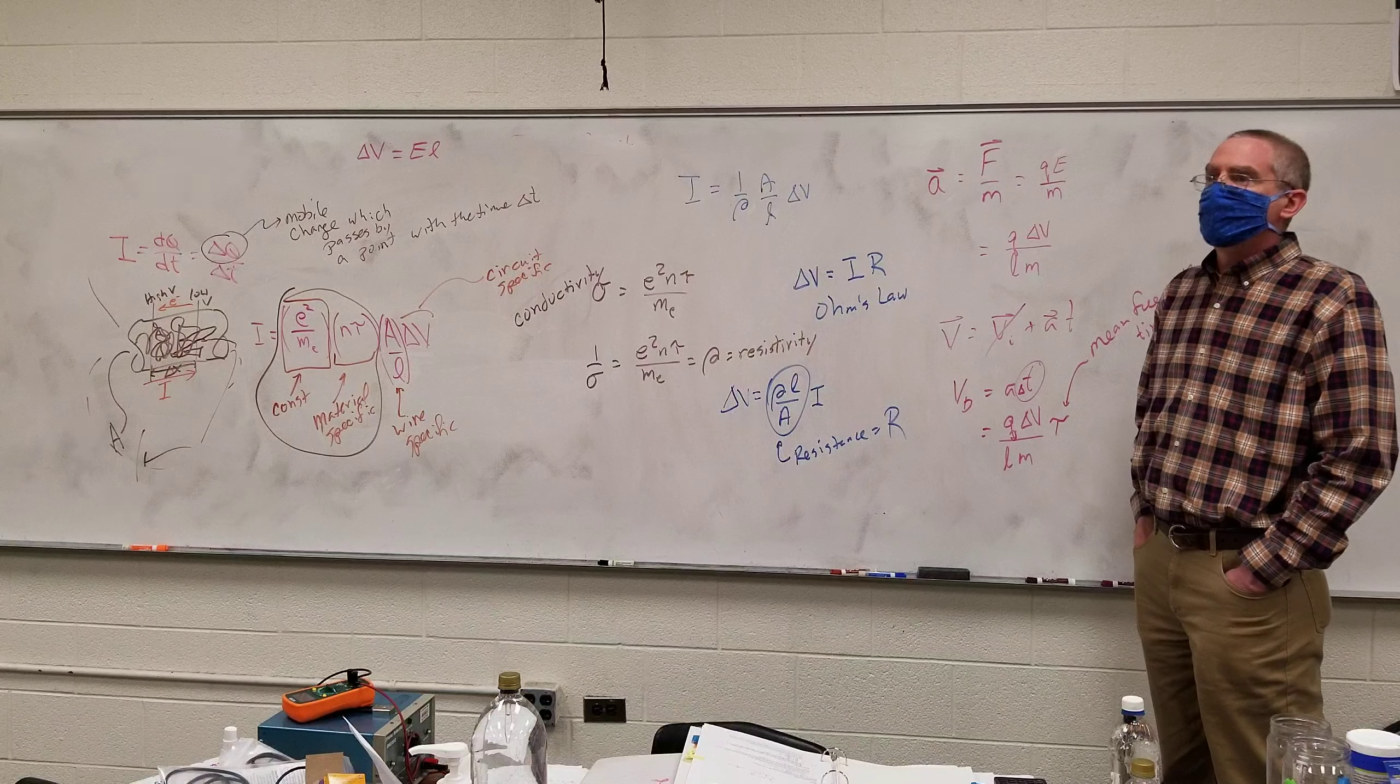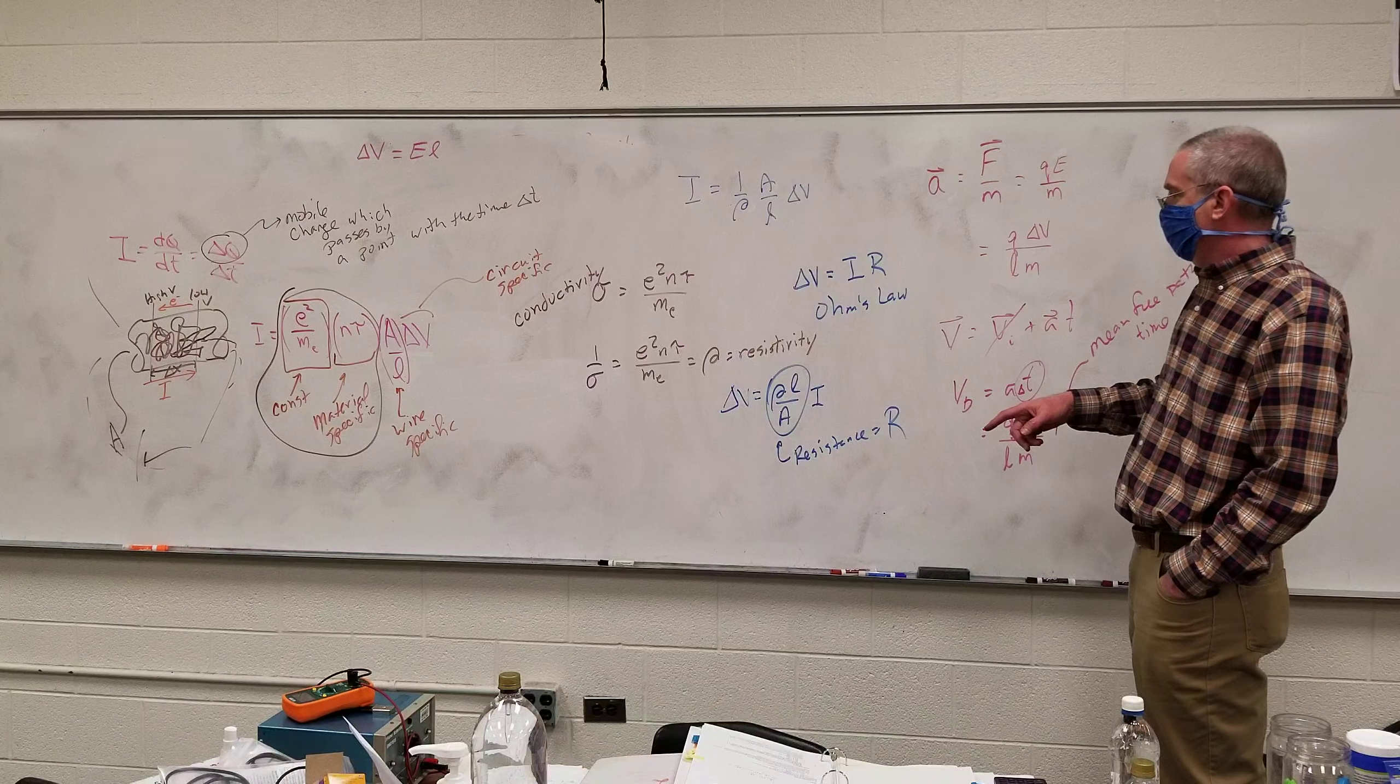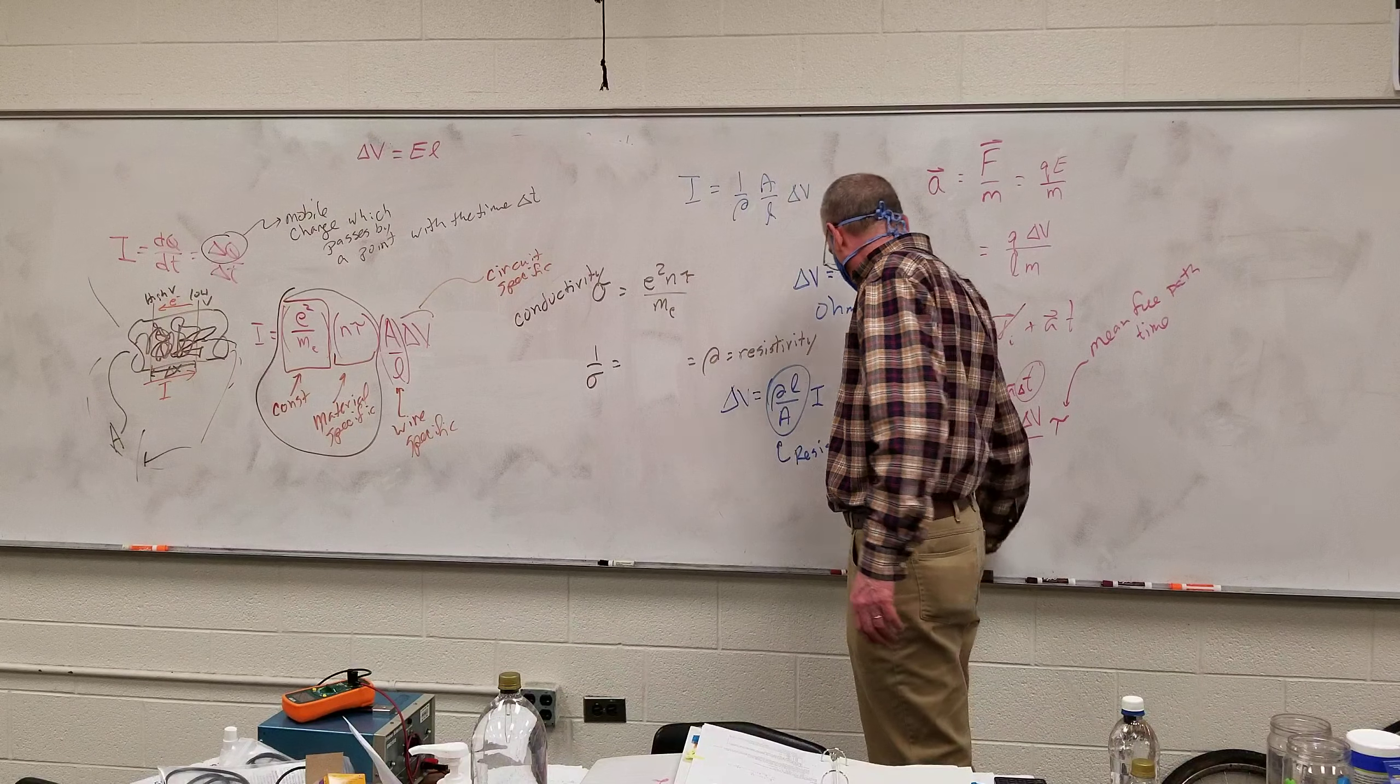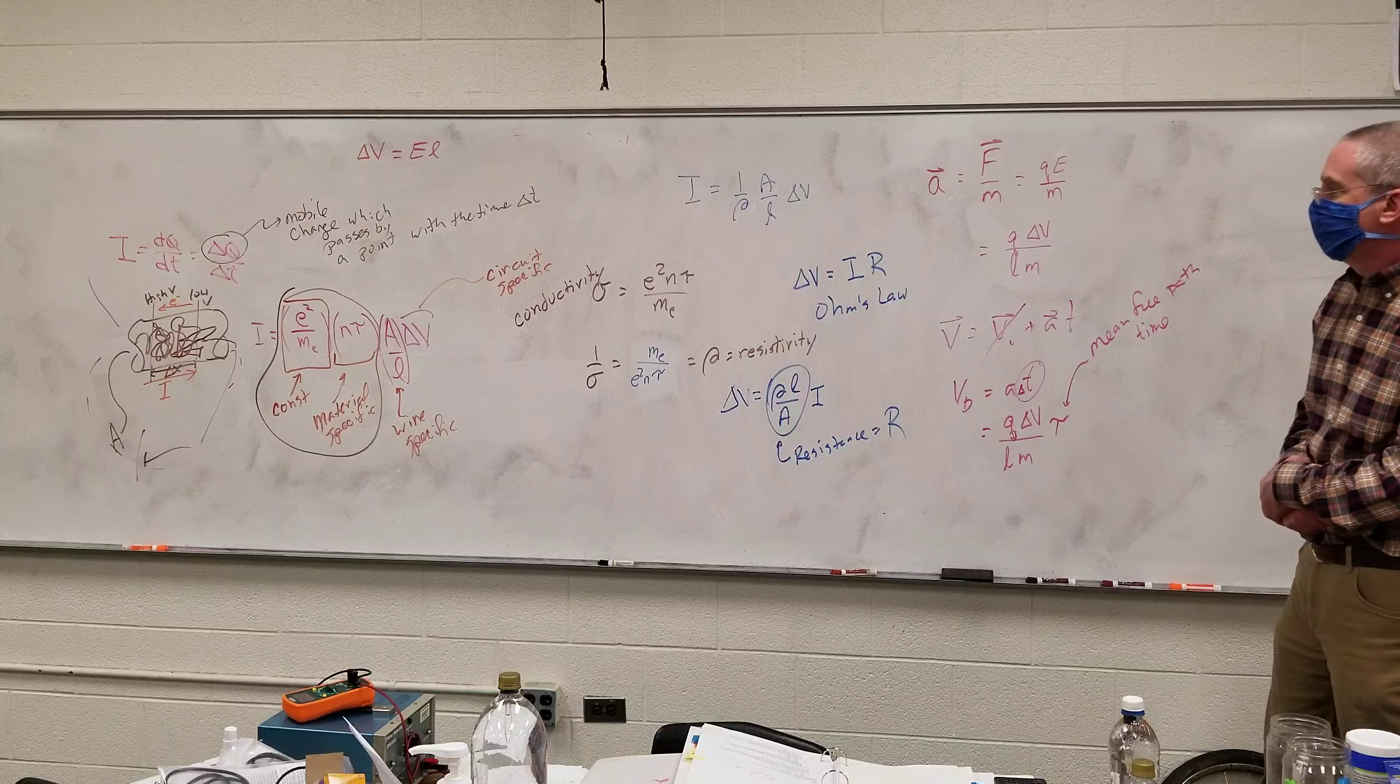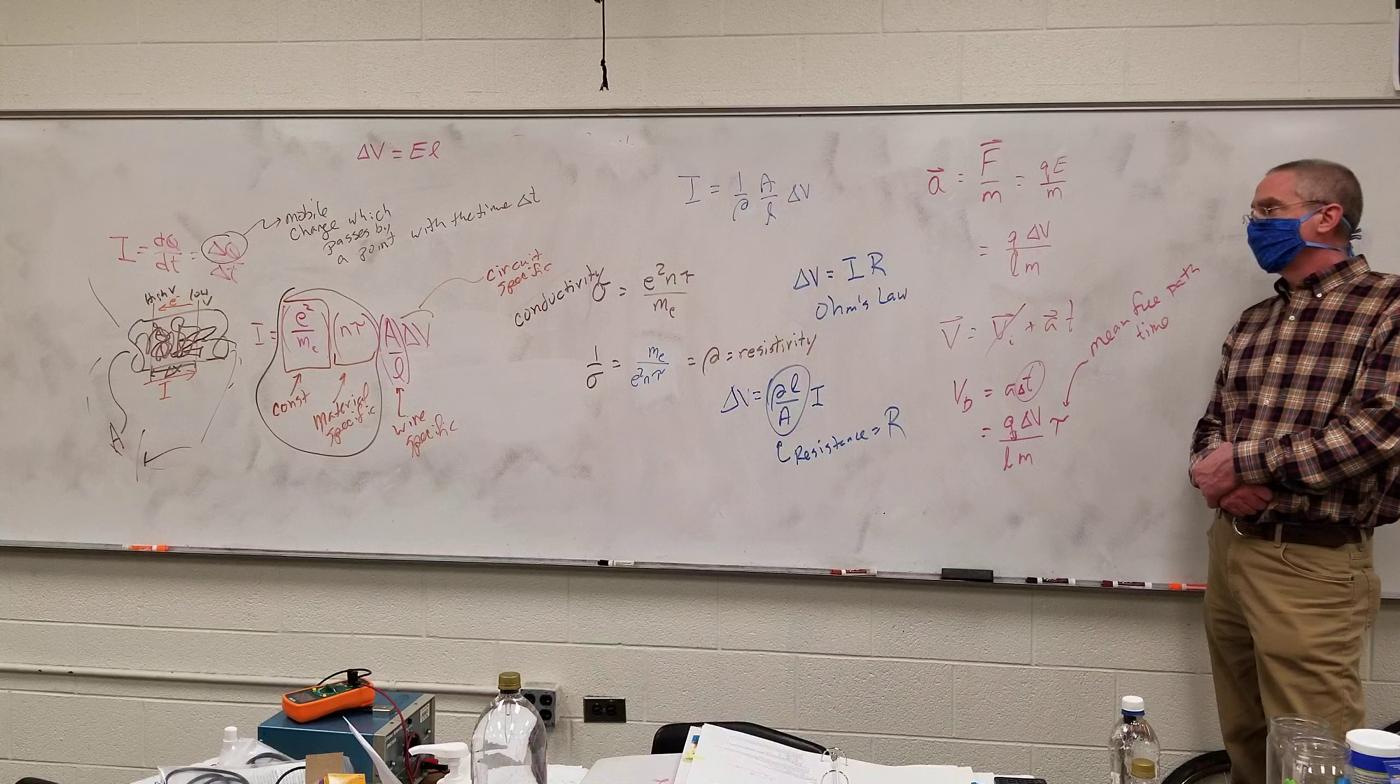You wrote sigma equals that stuff, and then regularly you have the same thing again. What, sorry? In the middle of the board, sigma equals E squared N tau. Oh! Oops! Thank you very much. You were right. That's M E over E squared N tau. Thank you. Any other mistakes? Yep. All right.